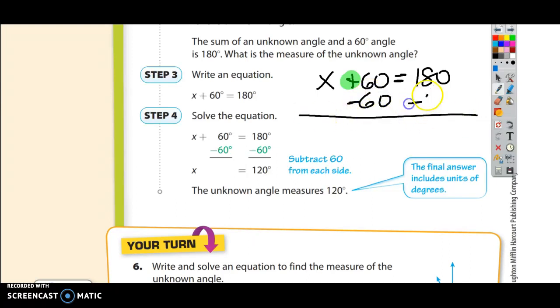I'm going to subtract that from both sides of the equal sign. So 60 minus 60 is nothing, which means x is all by itself, which is our whole point. And 180 minus 60 is 120.